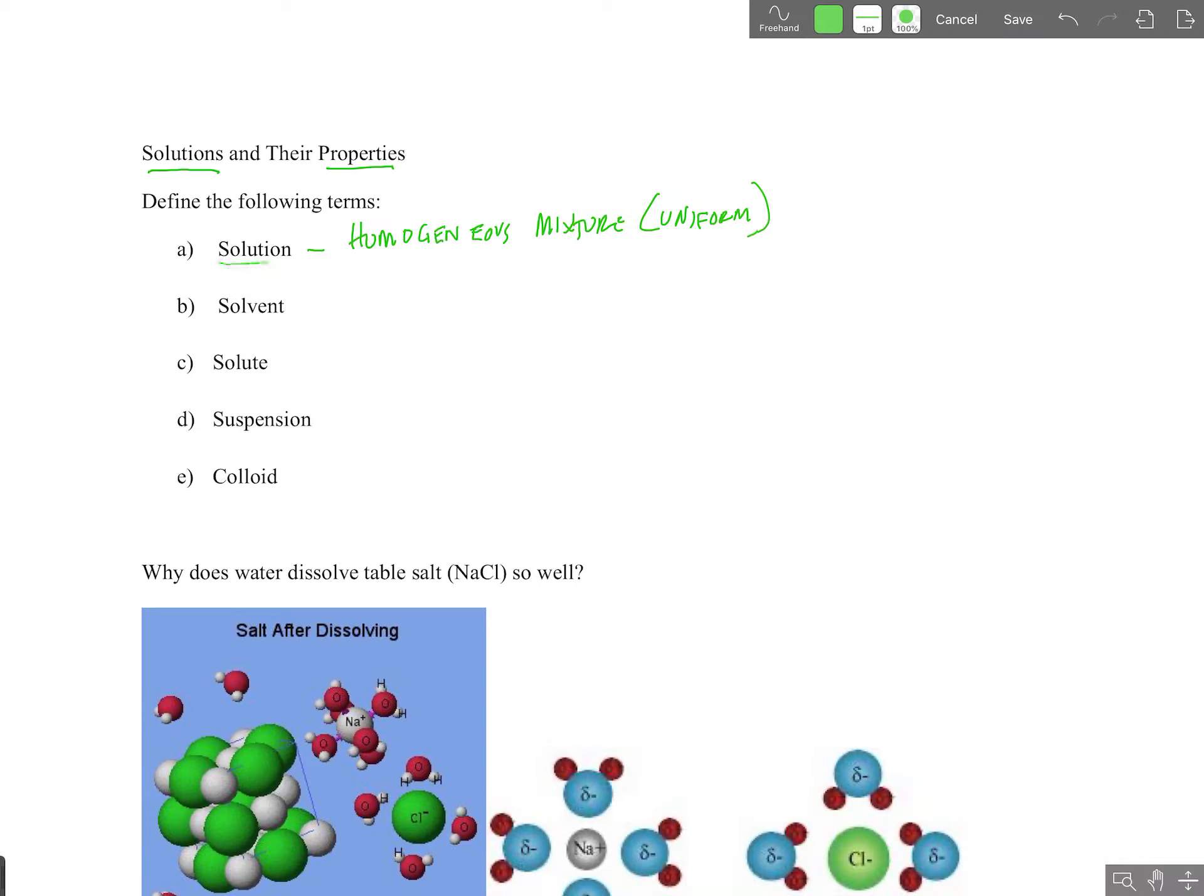In this unit, we're going to talk about water solutions primarily, but all solutions do not have to contain water. Air, for instance, is a solution of two gases, primarily nitrogen and oxygen. 14 karat gold is a solution of gold, silver, and copper. They are all homogeneous mixtures, and they're all considered solutions.